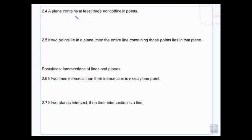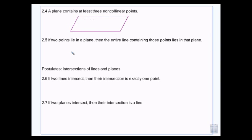Our next postulate is that a plane contains at least three non-collinear points. We had that any three non-collinear points would make a plane — well, now if I have a plane, that means I'm going to have at least three points on it that are not in a line. I can have infinitely many points on the plane, but there's going to be at least three that are non-collinear.